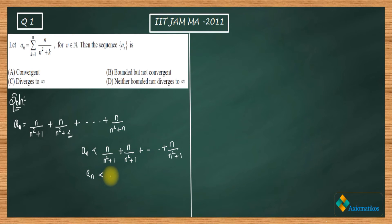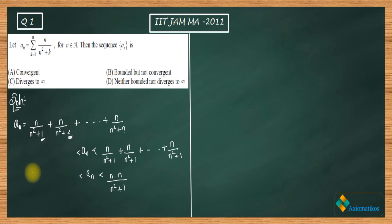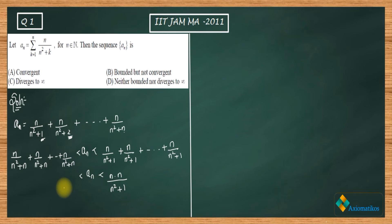I can write this upper bound as n · n/(n²+1), since there are n number of terms. To get the lower bound, I increase the denominator — if the denominator increases, the quantity decreases. So I replace every denominator with n²+n, giving n/(n²+n) + n/(n²+n) + ... + n/(n²+n), which equals n²/(n²+n).